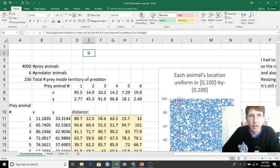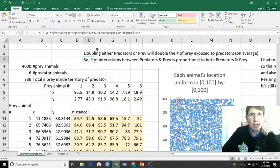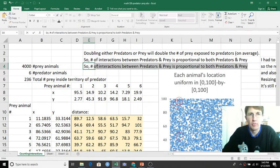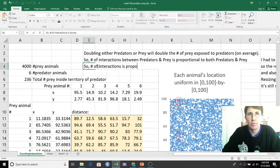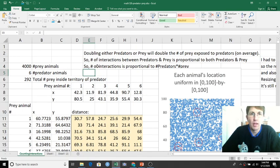What we're deciding here is that doubling either the predators or the prey will double the number of prey that are exposed to the predators on average. The number of interactions between predators and prey is proportional to both the number of predators and the prey. The only way to have something that's proportional to two things is to be proportional to their product. So the number of interactions is proportional to the number of predators times the number of prey. Now it's proportional to two things, and the only way to do that simultaneously is to be proportional to their product.